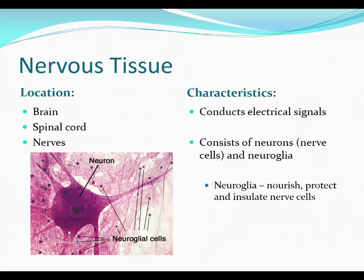Nervous tissue is only found in the brain, the spinal cord, and the nerves. What's special about it is it can conduct electrical signals — it has ion channels on the surface that can open and close depending on electricity. There are also tiny little cells in the background called neural glial cells, or the little black dots, that support the larger cells which are the neurons that conduct electrical impulses.